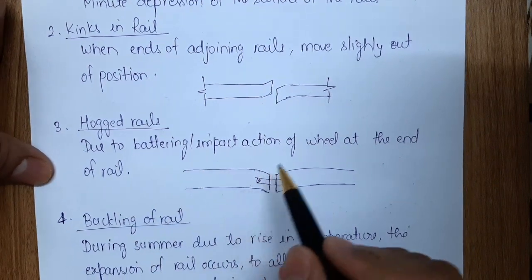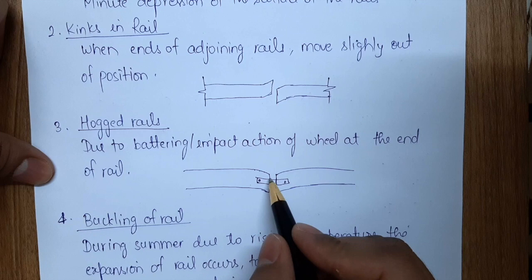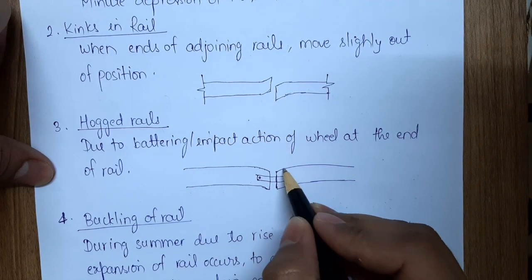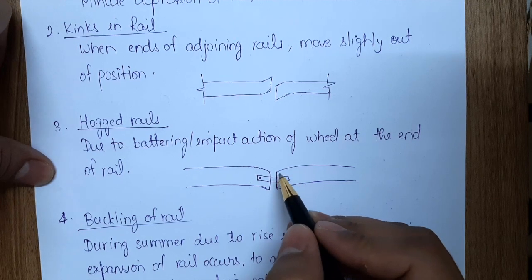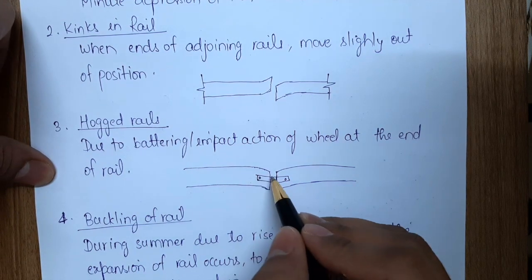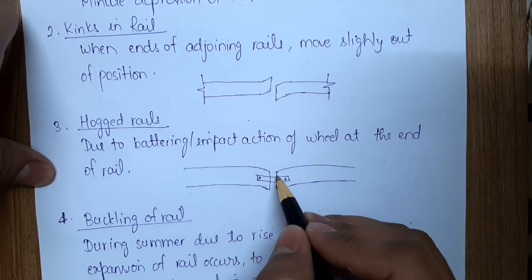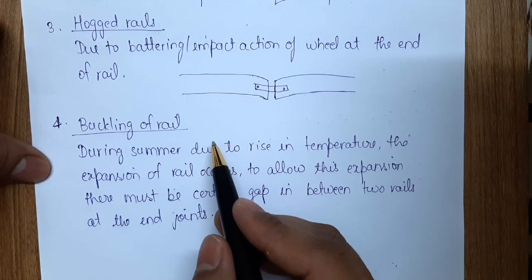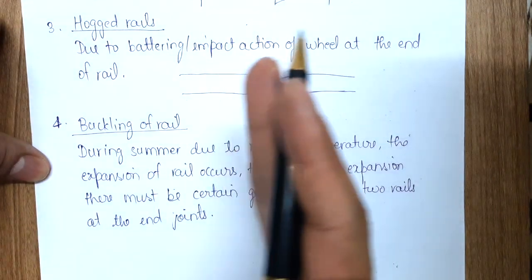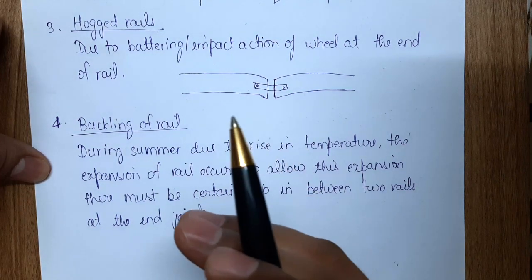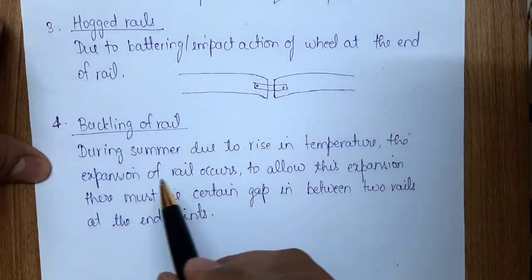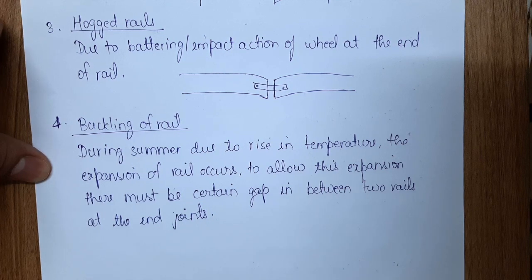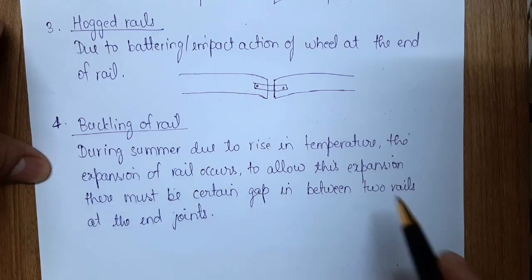Hogged rails are caused by the battering or impact action of the wheel at the end of the rail at a joint. As the wheel moves from one rail to another, an impact occurs at the joint, causing depression — this is hogged rail. Buckling of rail is observed in the lengthwise direction — a curve forms in the straight length of the rail. It occurs during summer due to rise in temperature causing expansion. A certain gap must be maintained between two rails at the end joint to prevent buckling.